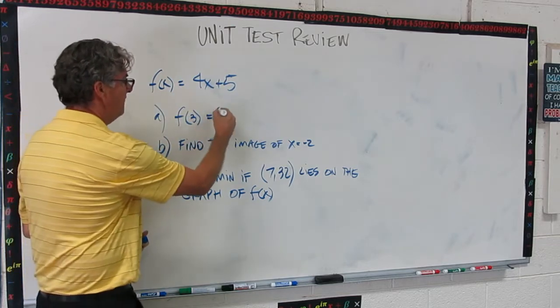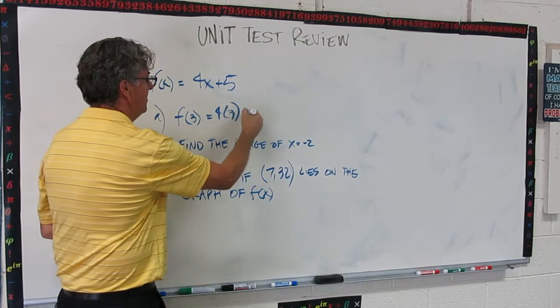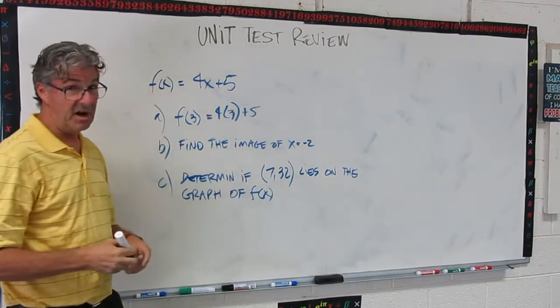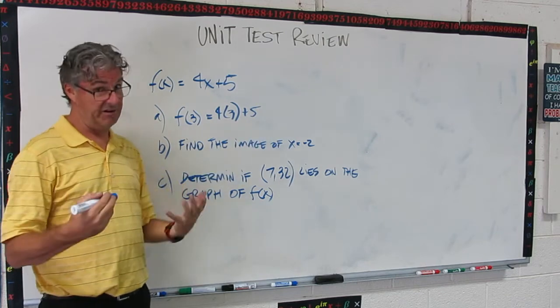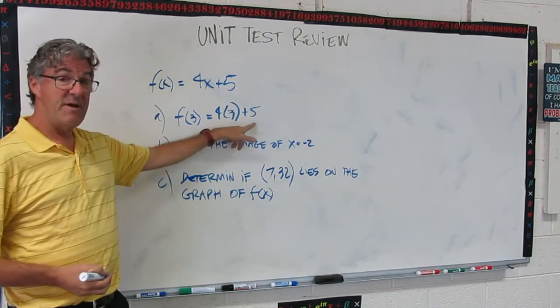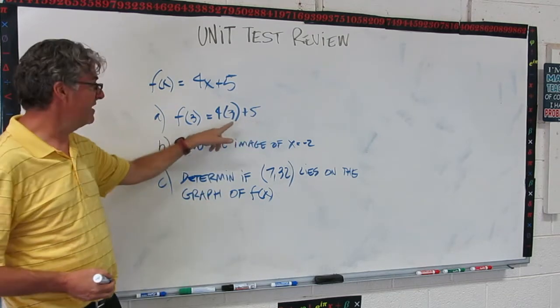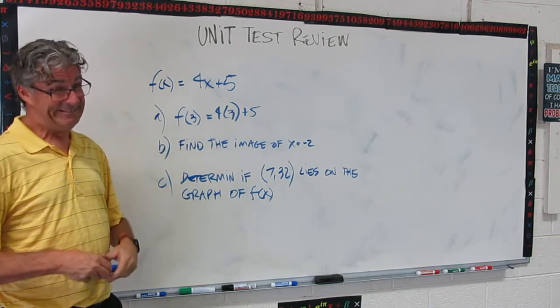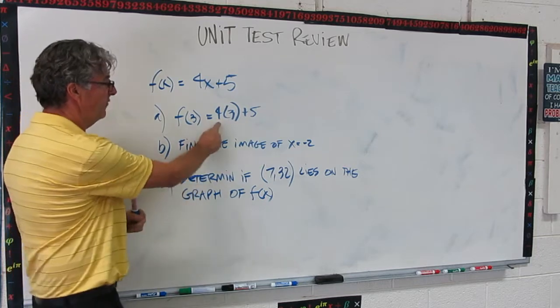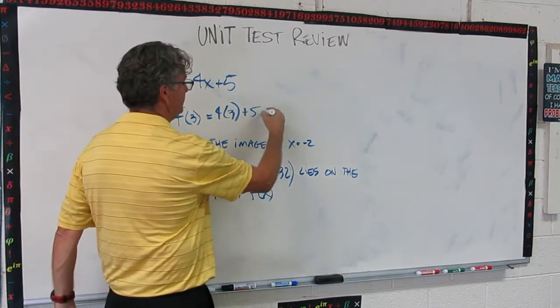So f of 3 is going to be 4 times 3 plus 5. Now, you might argue that this plug-in step is unnecessary. You can do this in your head, and I agree you can. However, not a bad thing to write down. I can give you partial credit if this is right but your answer is wrong. If you do it all in your head and your answer is wrong, you're going to lose more points. So 4 times 3 is 12 plus 5. This is 17.